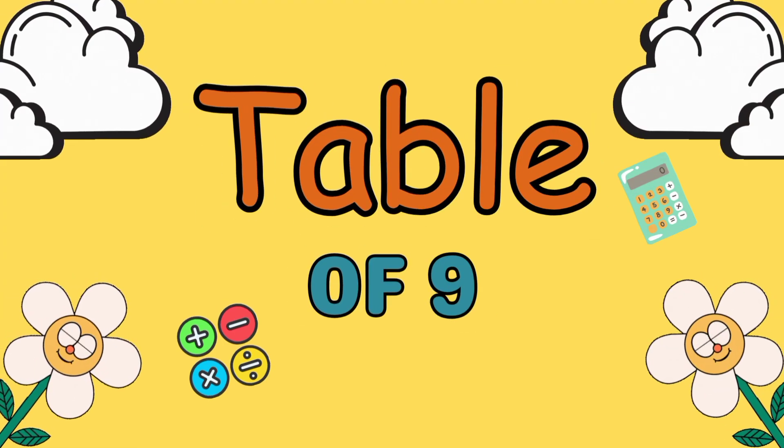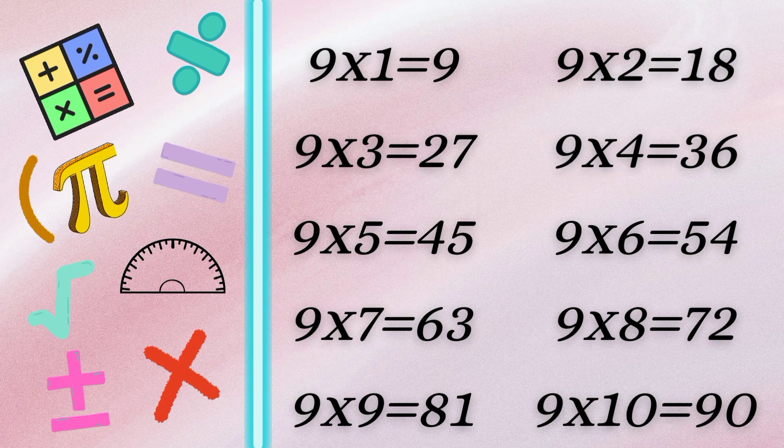Table of 9: 9 1s are 9, 9 2s are 18, 9 3s are 27, 9 4s are 36, 9 5s are 45, 9 6s are 54, 9 7s are 63, 9 8s are 72, 9 9s are 81, 9 10s are 90.